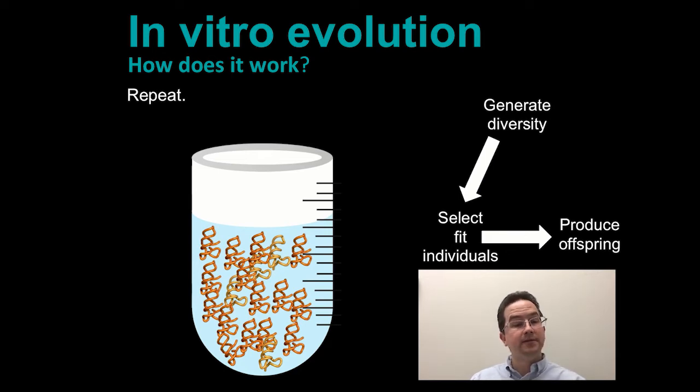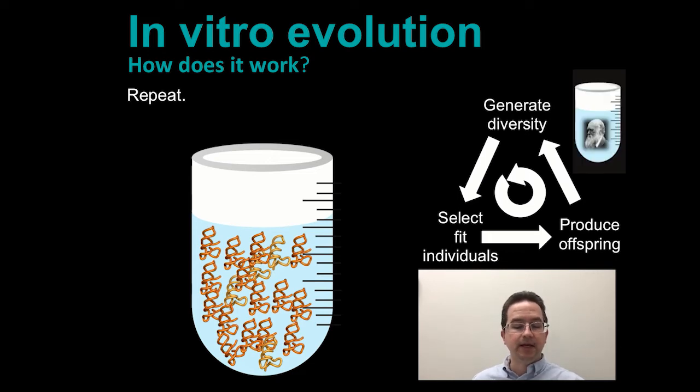And when we make these offspring, mutations are introduced and this results in more diversity for the next round. If we think of each round as a generation, you can see why we often call this evolution in a test tube. It's just that instead of a population of organisms evolving over time, it's a population of molecules evolving over time.